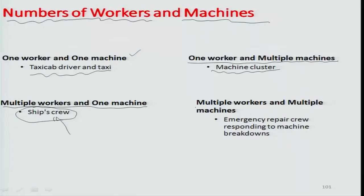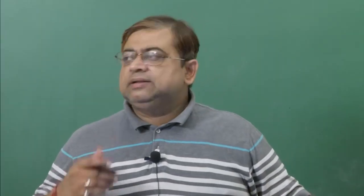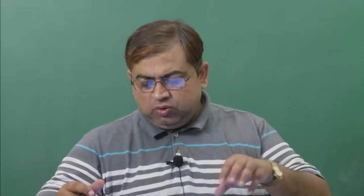There can also be a case of multiple workers and multiple machines — for example, an emergency repair crew responding to machine breakdowns. It may be necessary to remove the problem or restart the facility in a relatively short amount of time, making it worthwhile to put more than one skilled person on the job, going to multiple work centers and taking corrective actions so that the system can be quickly revamped back to zero conditions and operational again.